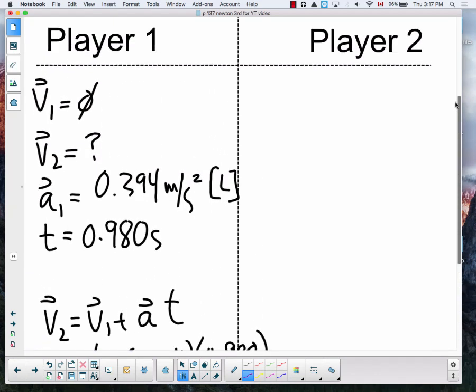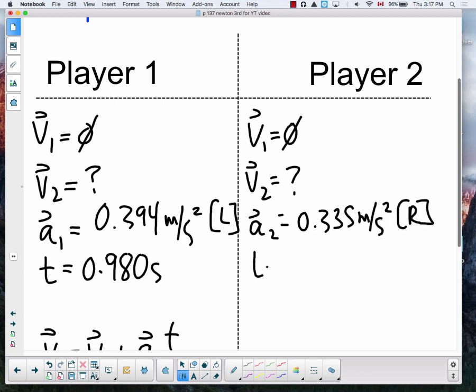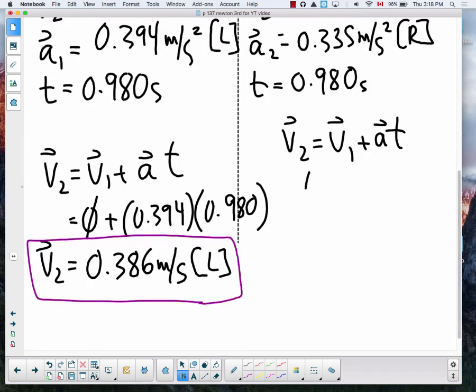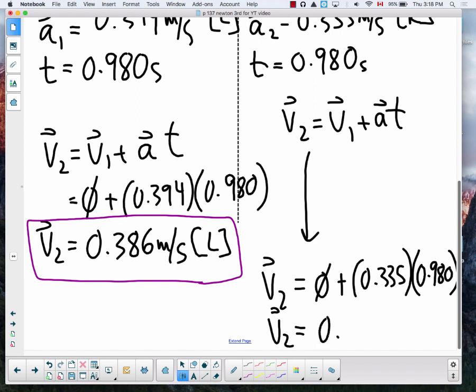Player two, and it is the exact same calculation, just slightly different initial conditions. So this is V₁ which is zero, V₂ is what we are looking for. Acceleration of player two was 0.335 meters per second squared to the right, and the time interval is still 0.980 seconds. We are using the exact same kinematic equation. Plug in our variables and solve. So the acceleration is 0.335, the time interval is 0.980. So the final velocity of player two will be 0.328 meters per second towards the right.